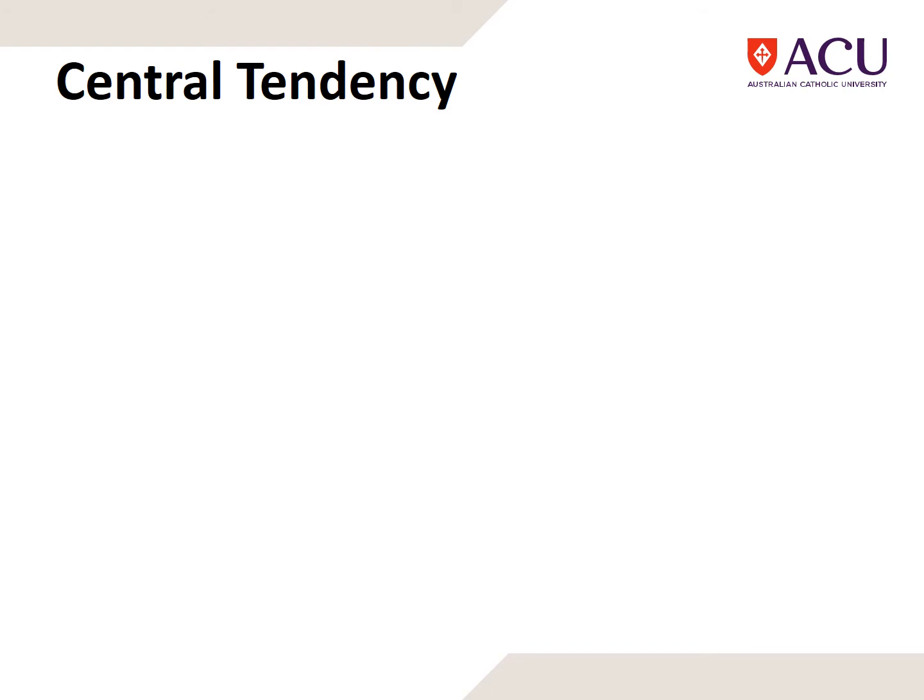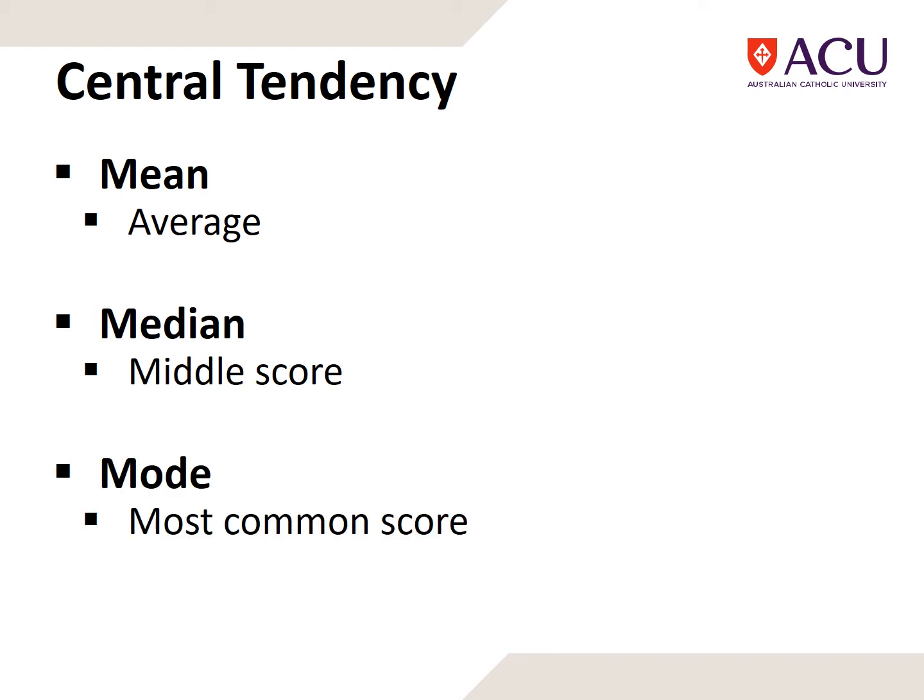Thinking more systematically about central tendency, we have the average, the median which is the middle score, and the mode which is the most common score. Whilst they seem obvious and we often cover these in school, I want to briefly go through them so we understand where we might want to use them.